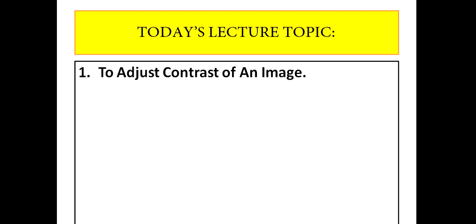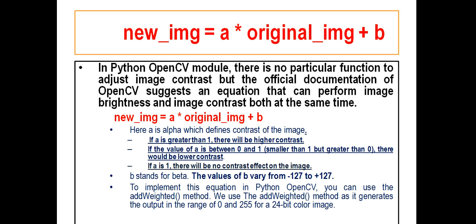In this lecture, our objective will be to practically go through the contrast adjustment of an image. As we are talking about OpenCV, in case of OpenCV we don't have any particular function to adjust image contrast, but its official documentation suggests an equation that can perform image brightness and image contrast both at the same time. So you have to focus on this equation: new_img = a * original_img + b. Do remember this equation and you can take a screenshot.